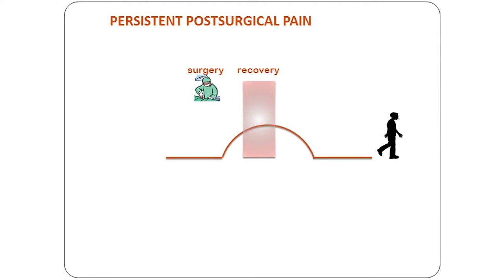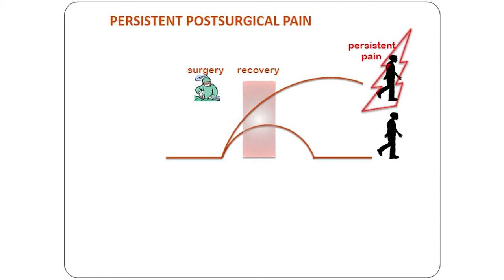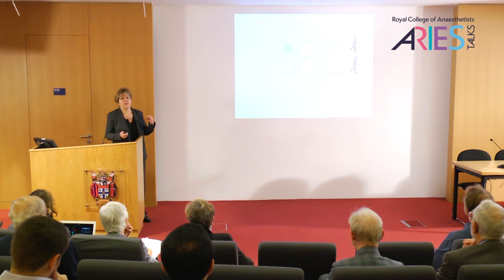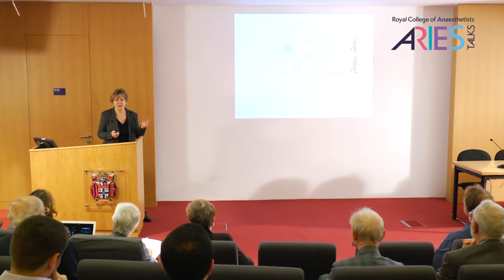What we normally expect after surgery is a period of pain and requirement for analgesia followed by recovery back to normal. But there's an increasing awareness that a proportion of people will develop persistent pain after surgery. In fact, one of the top ten research priorities in last year's perioperative research priority-setting exercise was what can we do to stop people developing chronic pain after surgery. We need to identify people at risk and understand the underlying mechanisms so that we can improve outcome.